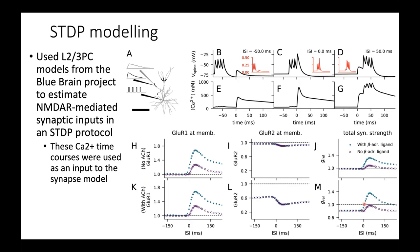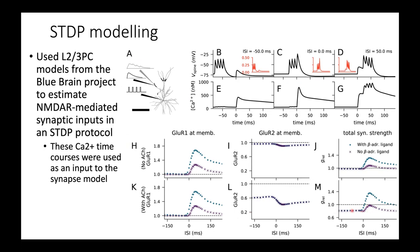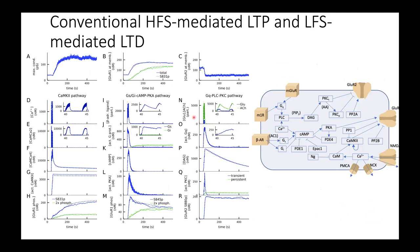With acetylcholine, GluR2 is removed from the membrane - the higher the calcium transients, the more it is removed. Without beta-adrenergic stimulation we get only LTD. In the presence of both acetylcholine and norepinephrine, we get LTD for post-pre stimuli and LTP for pre-post protocols - qualitatively reproducing the data from the Seol et al. paper.